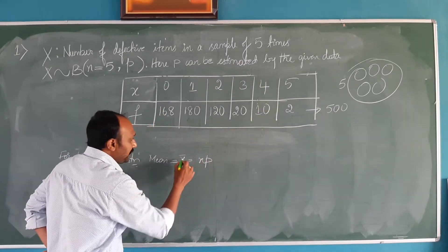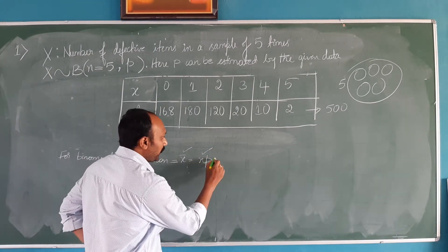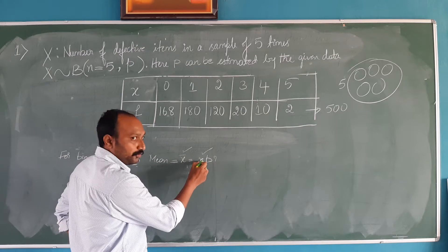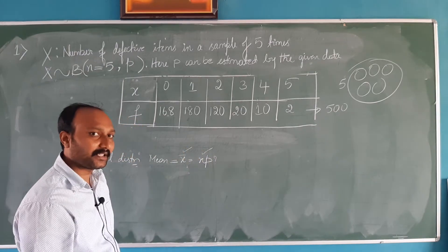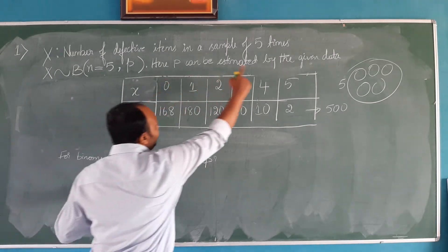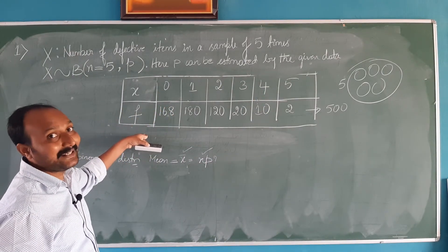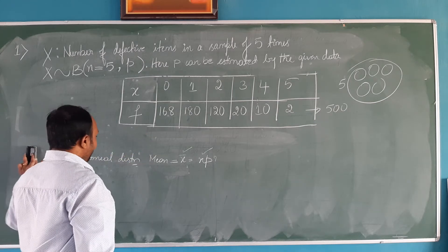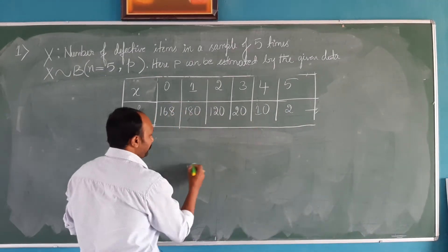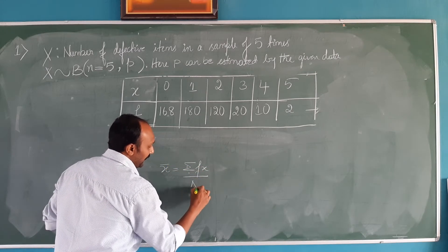By the given data, we can find what is x-bar. Already we know what is n; we do not know what is p. So out of these three values — x-bar, n, and p — if you know any two, that is x-bar and n, then automatically we can find the value of p, the probability of success. That is why, for the given data, we need to first estimate what is x-bar. Let us find x-bar. The formula for x-bar is summation fx divided by capital N.